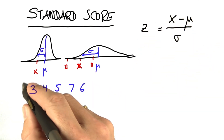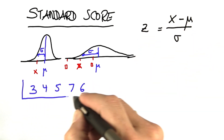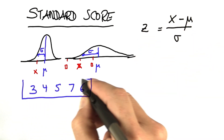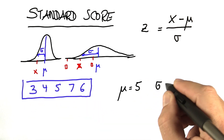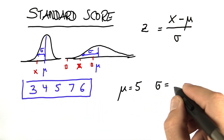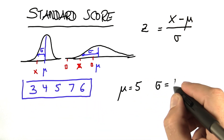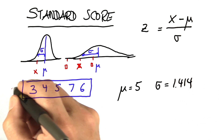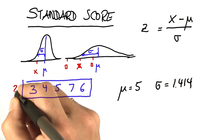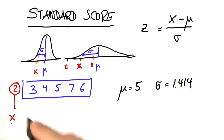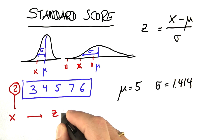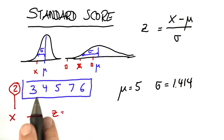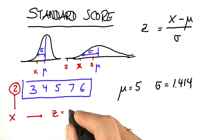Let's see — here's a data set: 3, 4, 5, 7, and 6. The mean is 5 and the standard deviation is the square root of 2. If I now ask you for the number 2, for this specific x, what do you think is the standard score relative to the Gaussian that fits those data points?